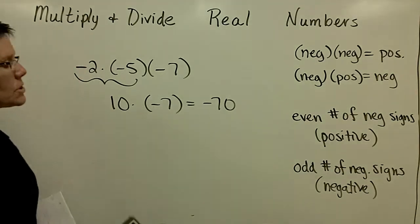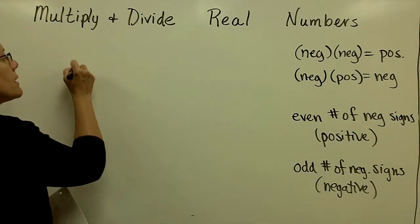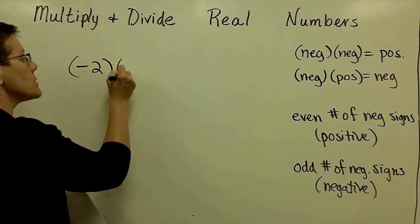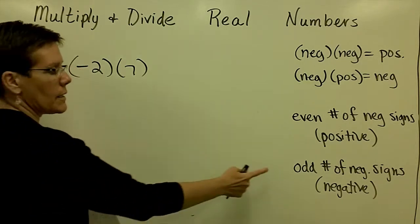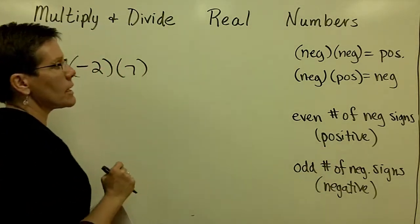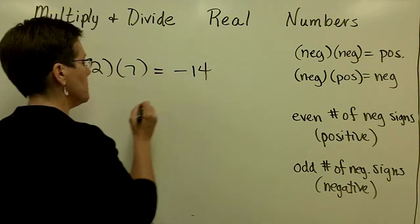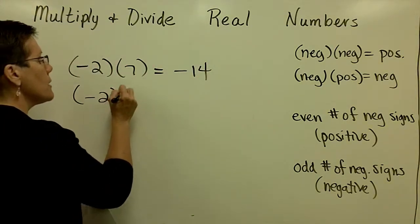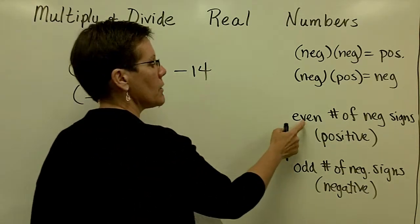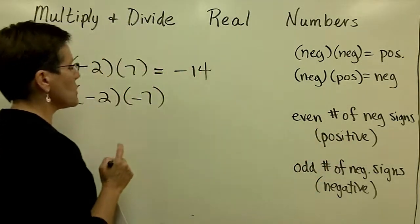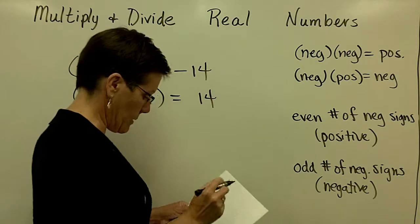So again, let's go back and look at just two factors. We had negative 2 times positive 7. That's one negative sign — an odd number — so it gives us a negative answer. We have said a negative times a positive is a negative. If I have an even number of negative signs — two of them — my answer is positive. We all know that a negative times a negative is a positive.